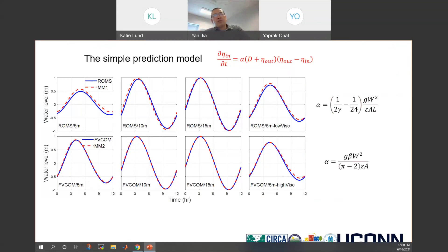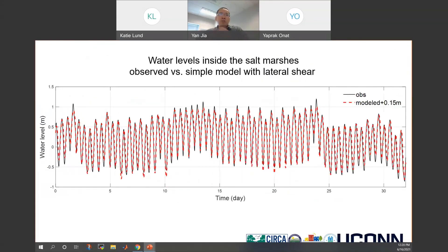The next step, we want to evaluate the performance of this simple model compared to our field observation. Here I'm showing the comparison between the water level measured inside of the salt marsh with the simple model with lateral shear assumptions. You can tell they overlap with each other very well, which indicates the simple prediction model works well. There's only 15 centimeters uniform bias between the observation and the model. It's near perfect and easy to handle. This simple model can be easily handled by other coastal engineers and it's less computationally expensive.